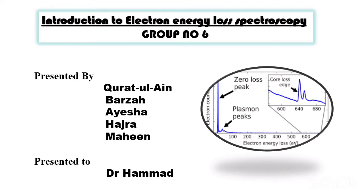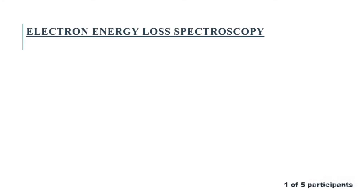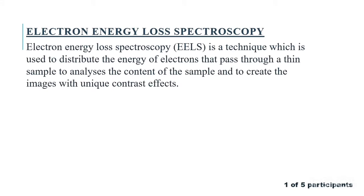First of all, what is electron energy loss spectroscopy? Electron energy loss spectroscopy, abbreviated as EELS, is a technique used to distribute the energy of electrons that pass through a thin film or thin sample to analyze the content of the sample and to create images with unique contrast effects.